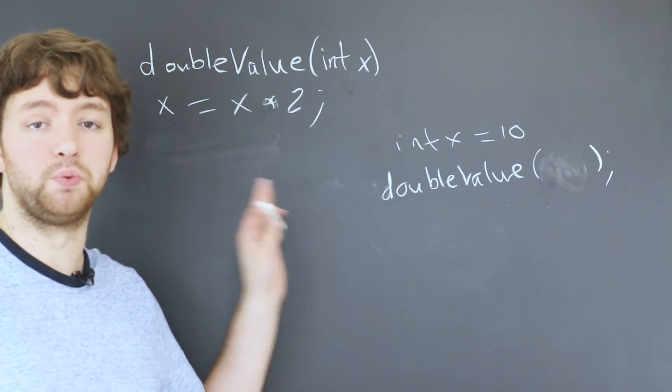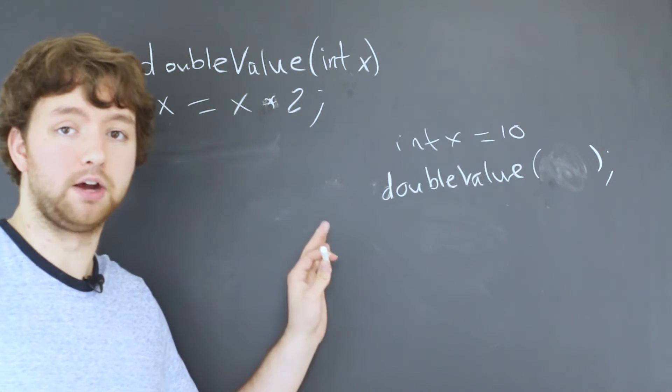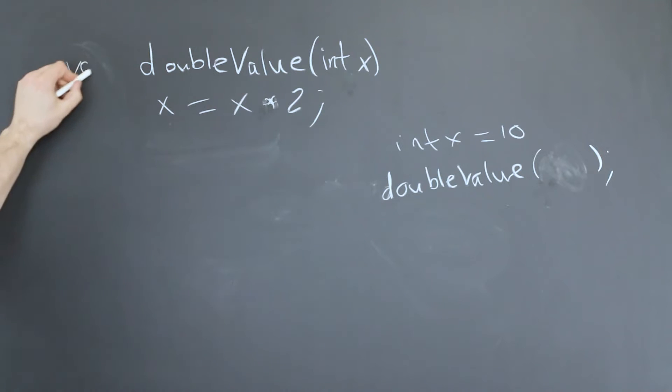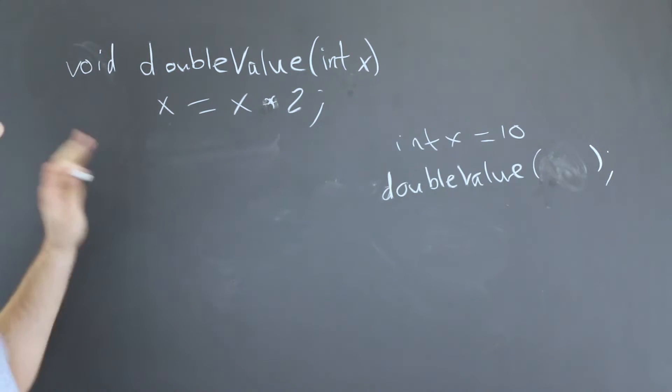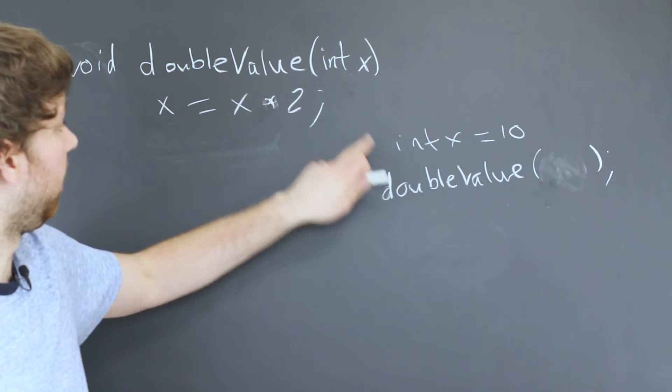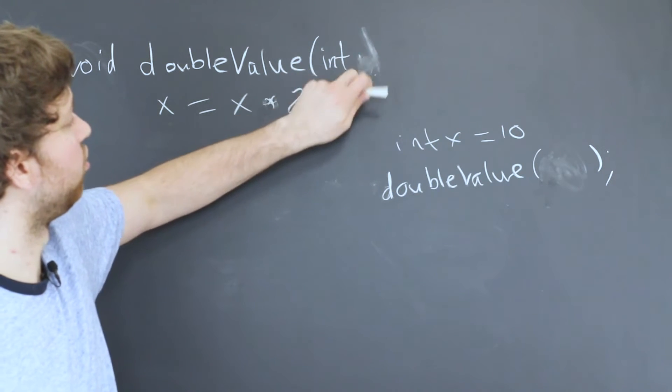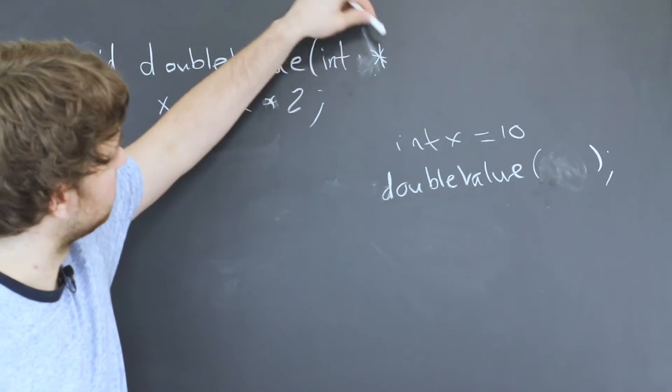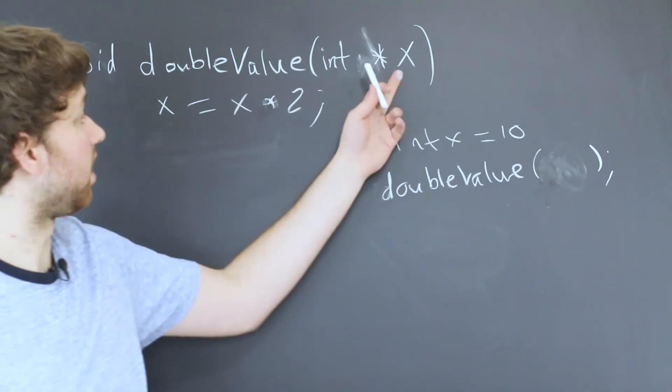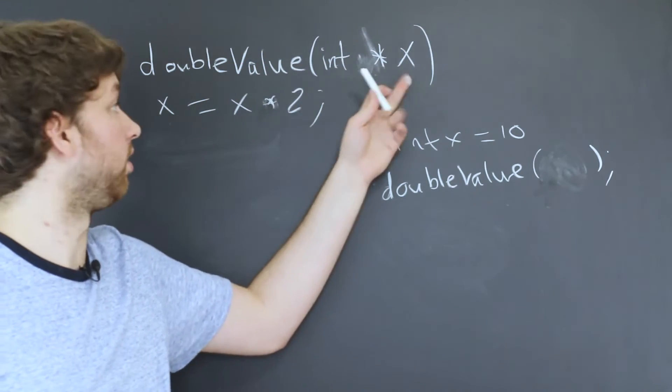Since we're going to be working with a pointer, we no longer need to return a value. So this is going to become a void function, meaning there's no return type. And instead of taking an integer x, we actually need to take an integer pointer, which is going to look like that. That's how you say we have an integer pointer and we named it x.